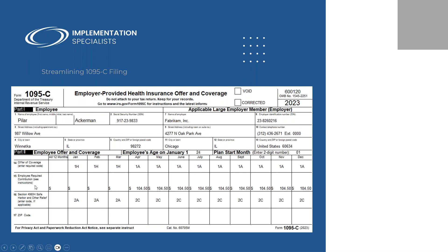Line 15 is the employee required contribution — the minimum contribution for the lowest cost self-only coverage. Line 16 is safe harbor codes, which is employee status for each month. In this example, 2A is not employed during the month, and 2C means the employee was enrolled in health coverage. These codes range from 2A to 2H. All of this information should come from your insurance provider when they send you that information early in each calendar year for prior year's tax filing.